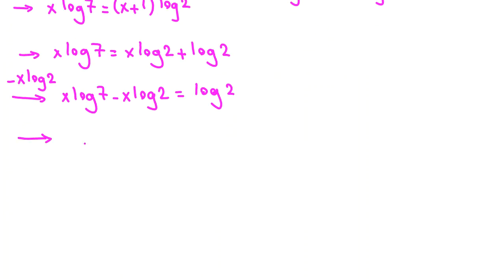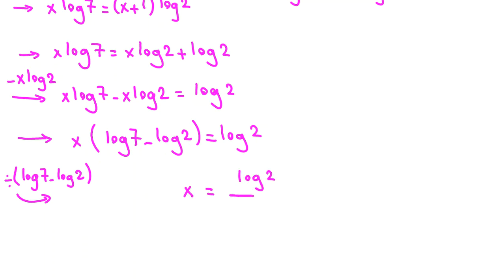Now if we factor out x, it will be x times (log 7 minus log 2) equals log 2. To find x, we divide by the coefficient, which is log 7 minus log 2. So x equals log 2 over (log 7 minus log 2). That's our answer.